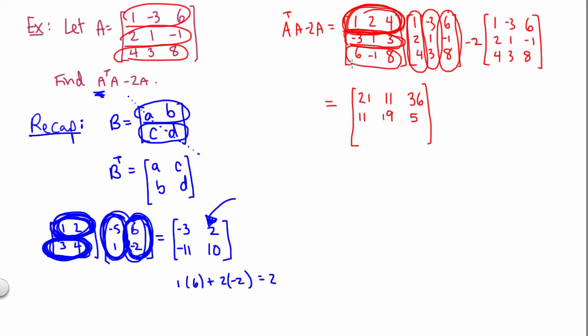And then moving down to the bottom row, we're going to do 6 minus 1, 8 dot product with the various columns here. So that's going to give us 36, 5, and then finally 101. So that's our matrix multiplication completed. Now we still need to subtract off 2 times A.